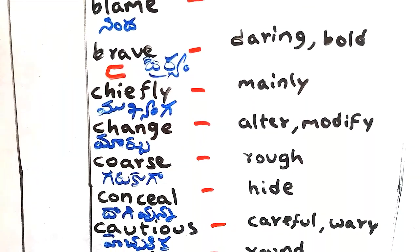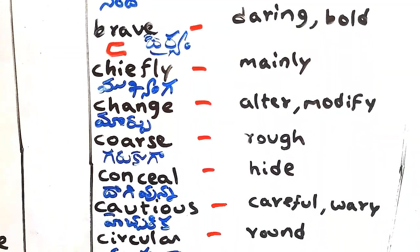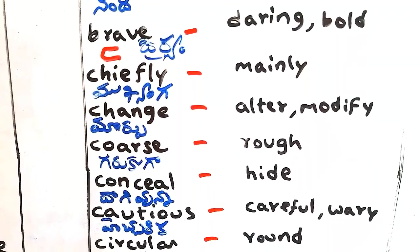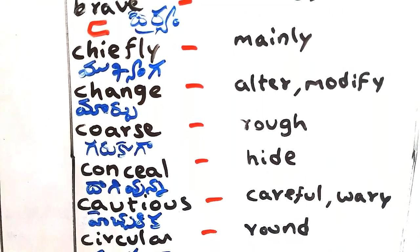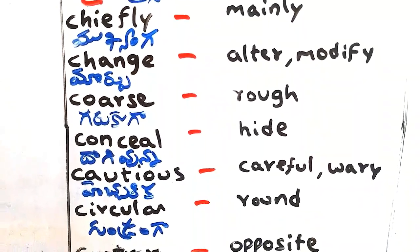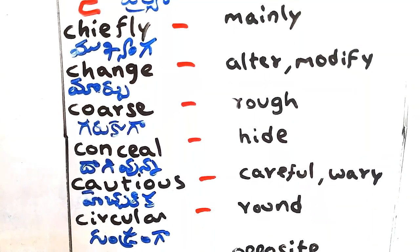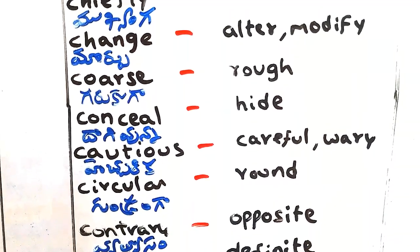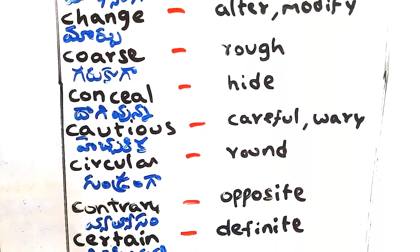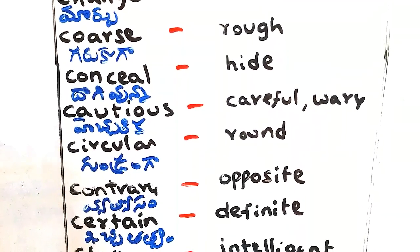C-Words. Chiefly - pradhananga, mukhya, mainly. Change - marple, alter, modify. Course - garukuga, rough. Conceal - dhaagivunna, hide. Cautious - echirika, careful, wary.